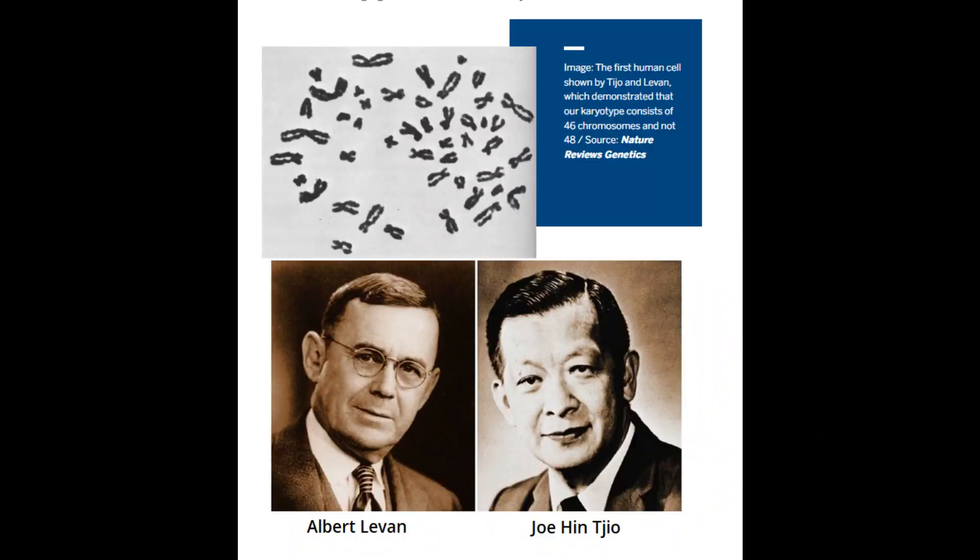Even textbooks with photos showing 23 pairs incorrectly declared the number to be 24, based on the authority of Painter. Painter's influence was so great that many scientists preferred to believe his count over the actual evidence, and scientists who obtained the accurate number modified or discarded their data to agree with Painter's count. Finally in 1956, two scientists — Joe Hin Tjio and Albert Levan — used modern techniques to determine the number of human chromosomes to be 23 pairs and proved Painter wrong. It is important to note that this fallacy should not be used to dismiss the claims of experts or scientific consensus.